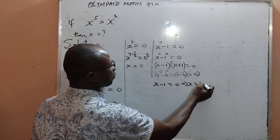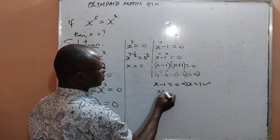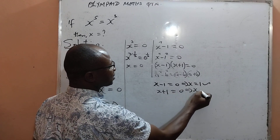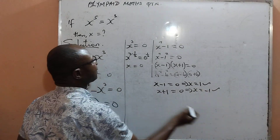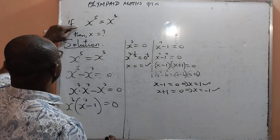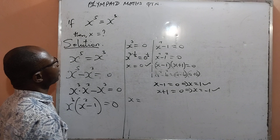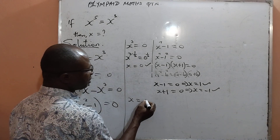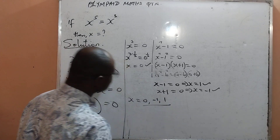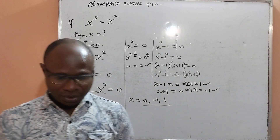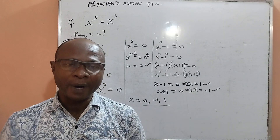By the product rule, x minus 1 equals 0 implies x equals 1, and x plus 1 equals 0 implies x equals negative 1. In conclusion, all the values of x are: x equals 0, negative 1, and positive 1. These are the three real solutions.